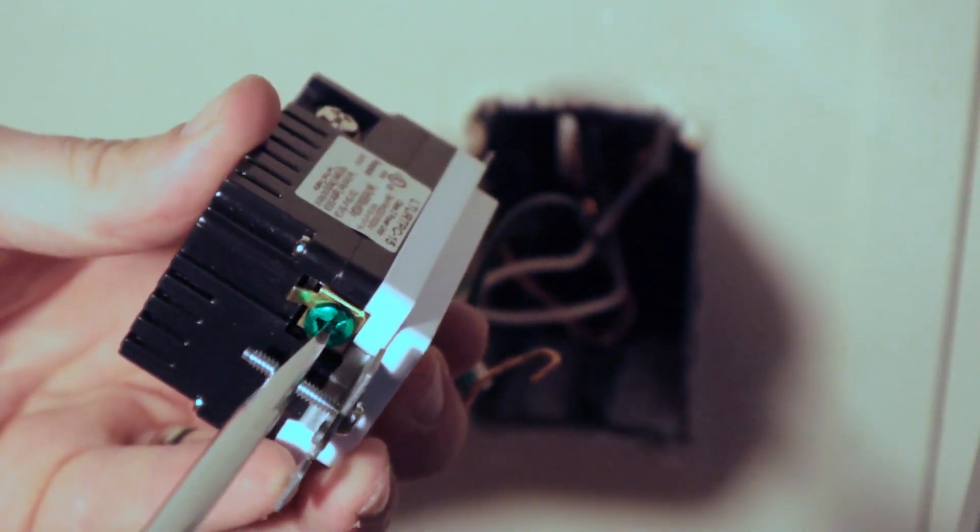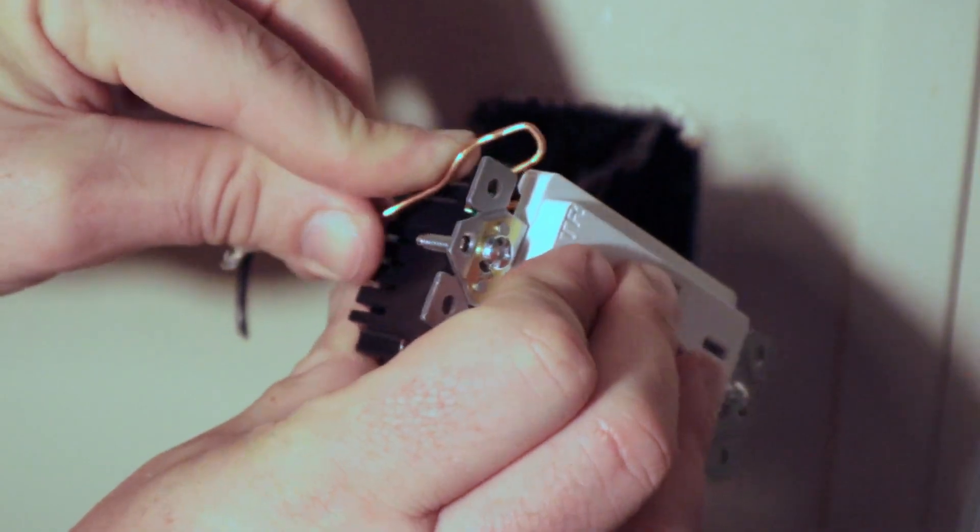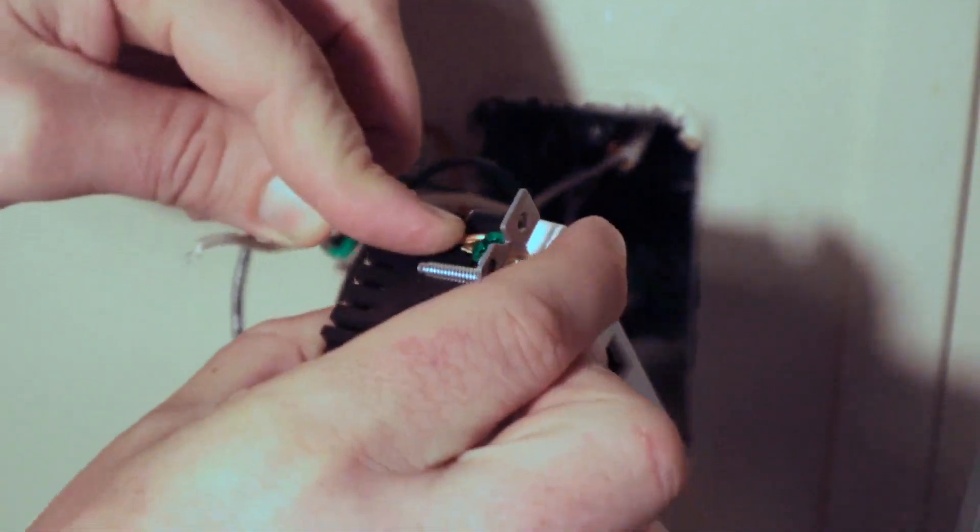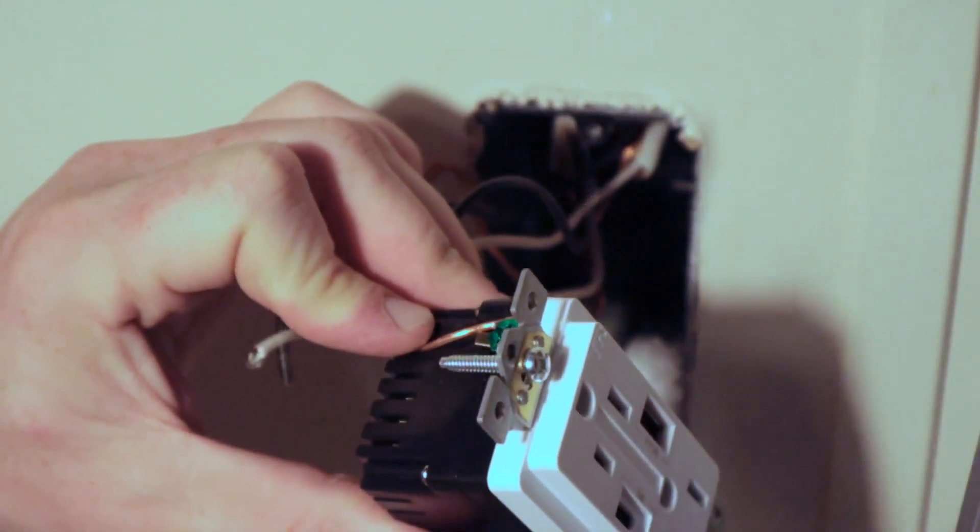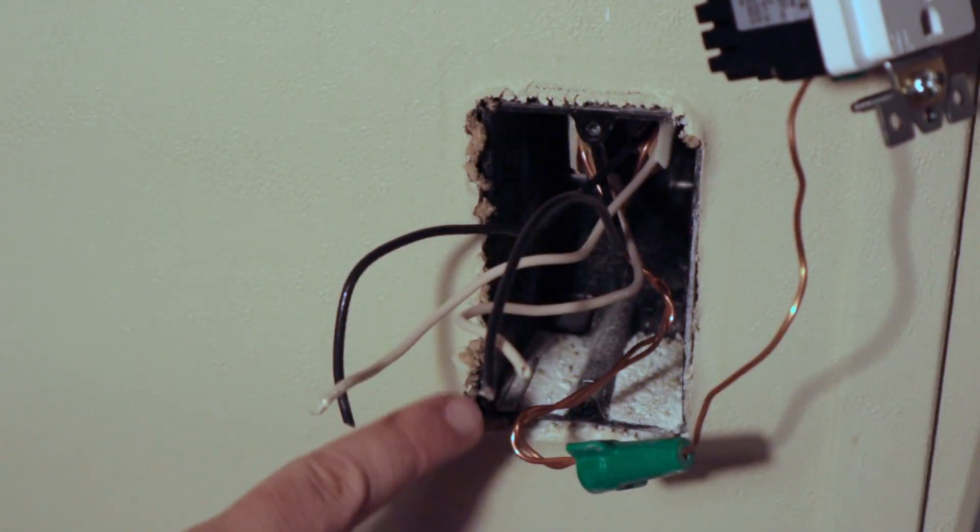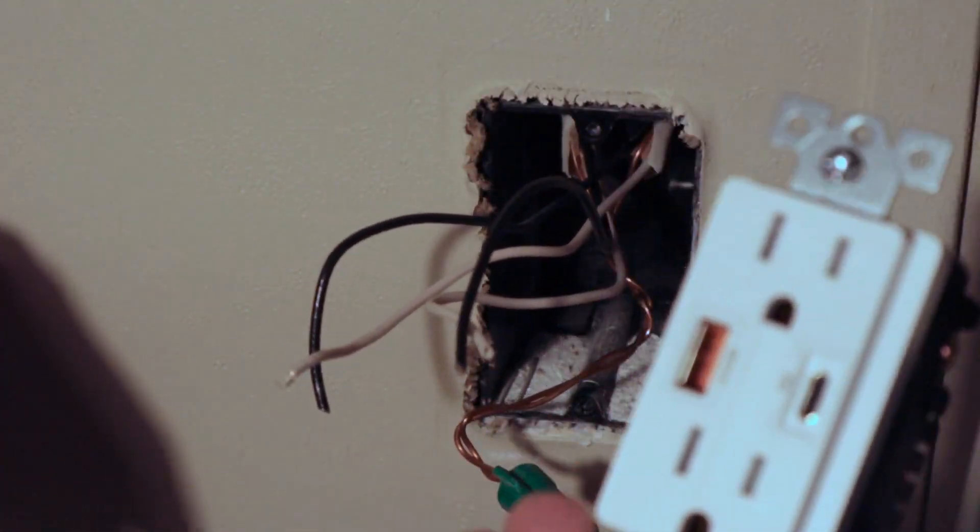So the first thing I'm going to do is install the ground to this device. Luckily my grounding wire was already curled over from the last device. So I'll just wrap it around the grounding screw and tighten it. We see that there's two grounding wires held together with a green wire nut so that my grounding is passing through down line on the circuit.